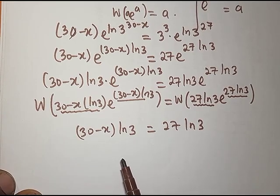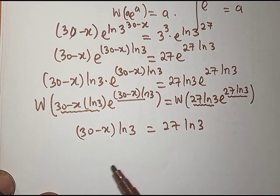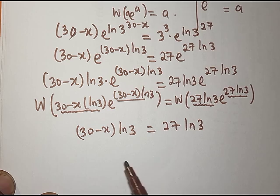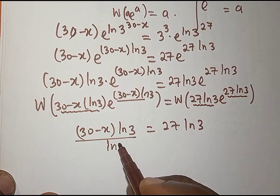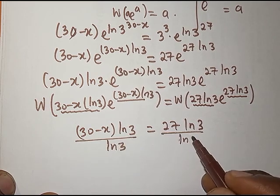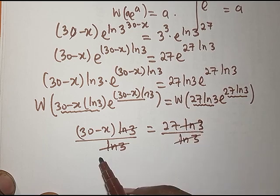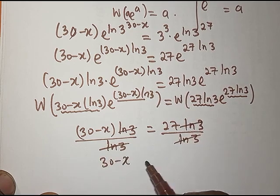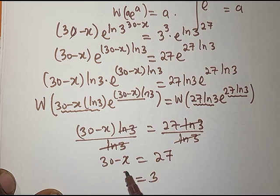So we get (30 − x) · ln 3 = 27 · ln 3. Dividing both sides by ln 3, those cancel and we have 30 − x = 27. Making x the subject, x equals 3, and that is the solution to the problem.